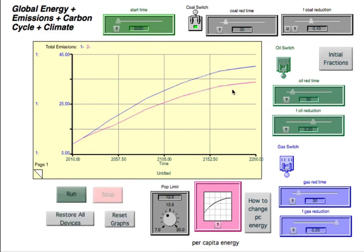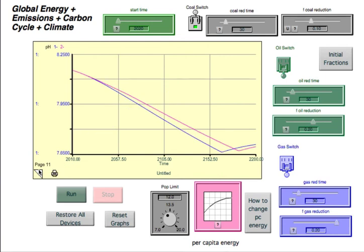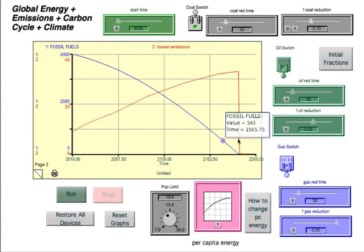There we go. We've brought the emissions down quite a bit. And we don't run out of fossil fuels for a little bit later here. So let's see if we can get it so we don't run out of fossil fuels. Let's reduce the amount of oil we use by 10%.